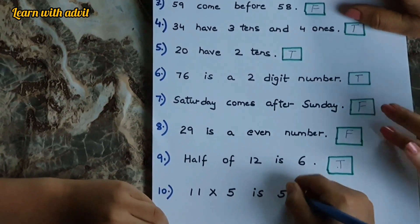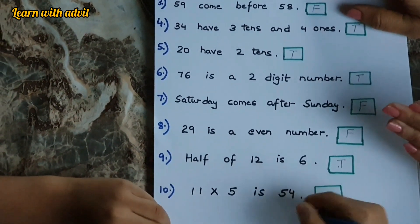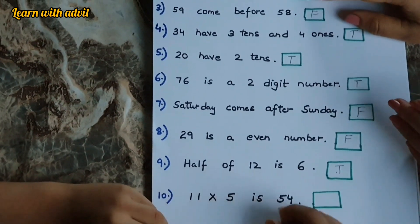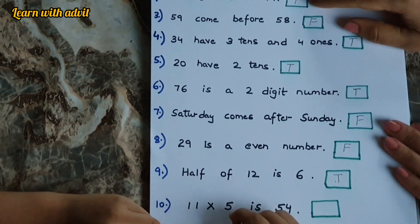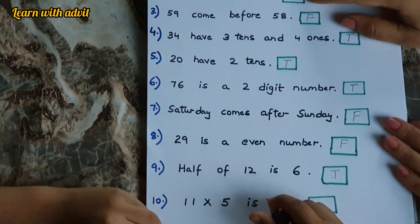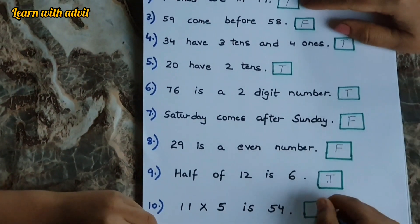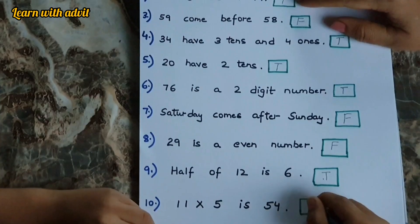11 times 5 is 54? No. It's 11, 5 elevens is 55. So it's false.